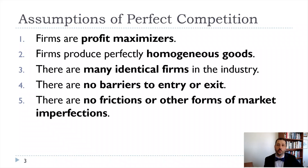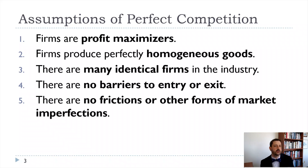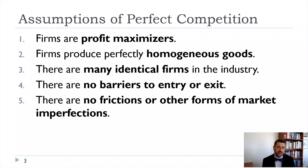Let's talk about our assumptions for perfect competition. First, we're going to keep this assumption throughout the semester: firms are profit maximizers. There is some literature about other things firms might want to maximize — they might want to maximize size, especially because CEO pay tends to be most correlated with firm size — or market share. But for the most part, we assume firms are profit maximizers.